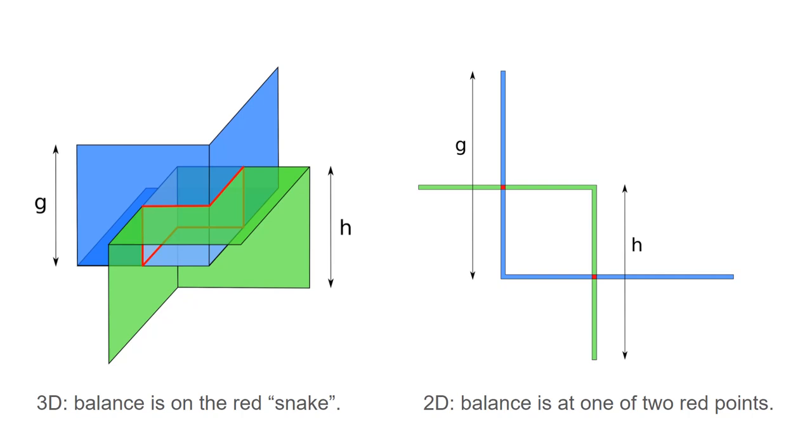Contrast this to the two-dimensional case on the right, where we had just lines, L-shaped lines, that intersect at precisely two points that depict the exact knowledge of the two balances up to the permutation.